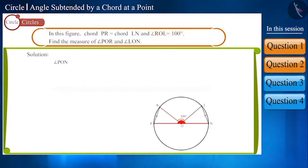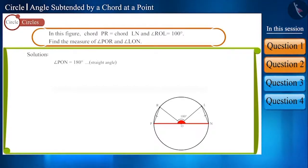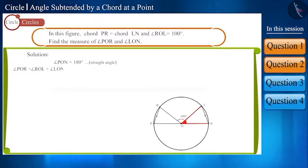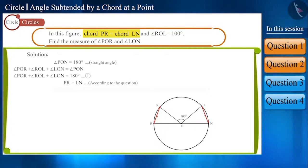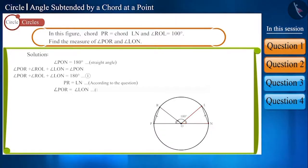Angle PON is equal to 180 degrees because it is a straight angle and PN is the diameter of the circle. You can see that angle PON is made up of angle POR, angle ROL, and angle LON. We are given that chords PR and LN are equal, so angle POR and angle LON will also be equal, because equal chords of a circle subtend equal angles at the center.